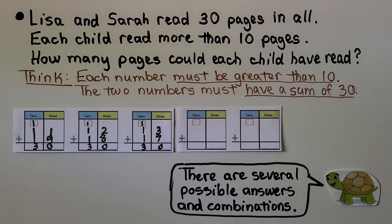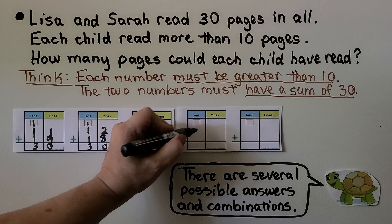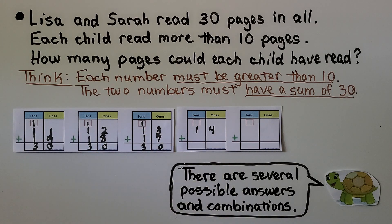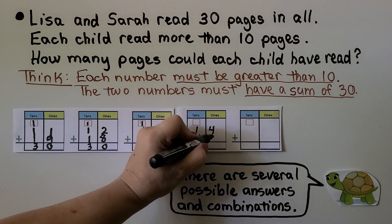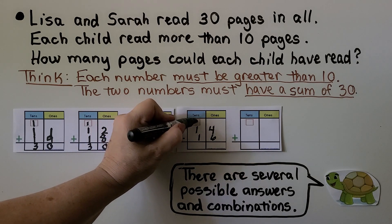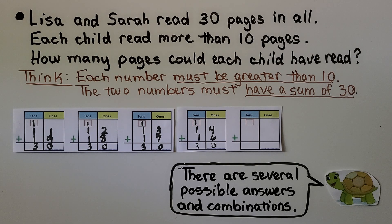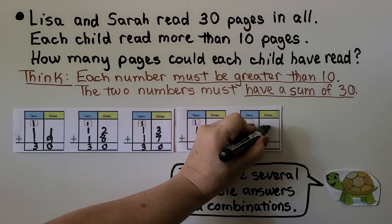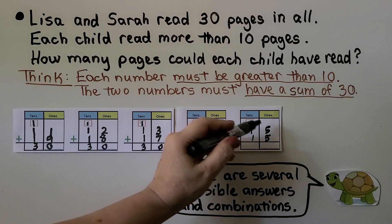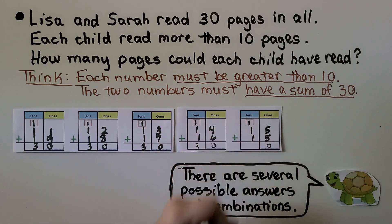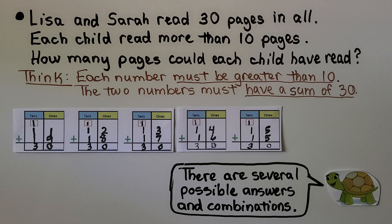We can also try 14 — that's greater than 10. If one of them read 14, the other must have read 16, because 6 plus 4 is 10: we regroup the 1, put 0 here, and have three tens — that's 30. They also could have read the same number of pages: 15 and 15. Five plus 5 is 10 — we regroup the 1, put 0 in the ones place, and have three tens. So there are several possible answers. If we just need to pick one combination, any one of these would be correct.